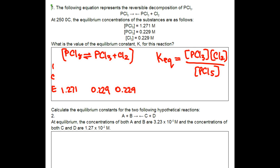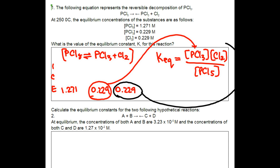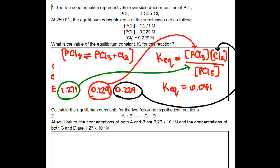Then it's a matter of plugging in the numbers. Here we have the equilibrium concentration of PCl3, here we have the equilibrium concentration of Cl2, and here we have the equilibrium concentration of PCl5. There are no squared terms or anything of that nature, so all you're doing is multiplying and dividing. You should get a K-equilibrium equal to 0.04125.